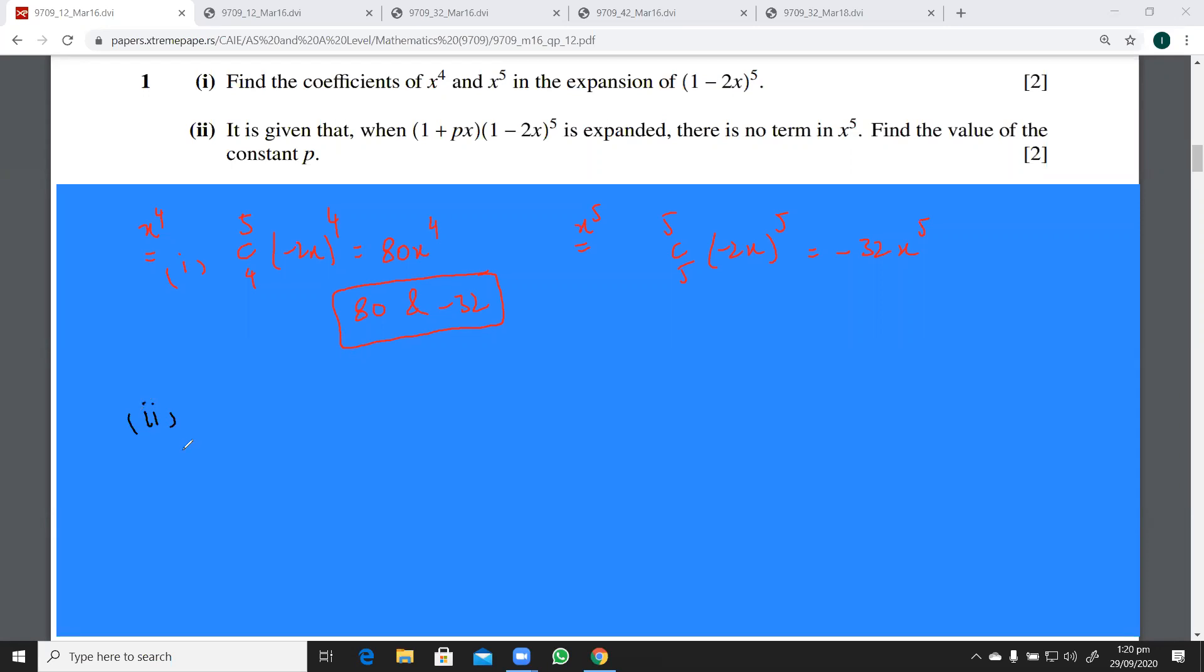It says here that it is given that (1 + px)(1 - 2x)⁵, there is no term in x⁵. Now what does it mean when there is no term in x? Let me give you an example. Suppose you have x² + 5. This is a quadratic polynomial. There is no term in x, so that